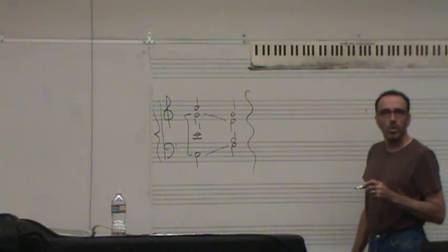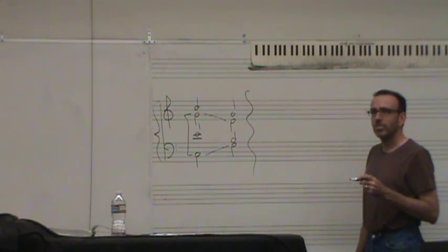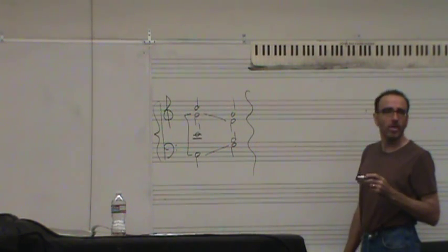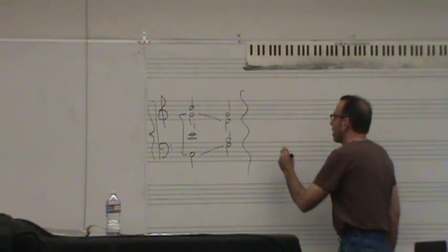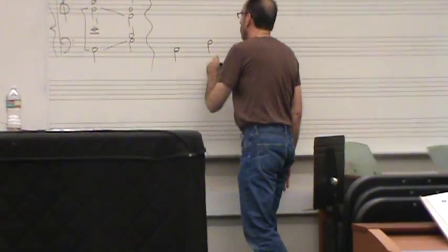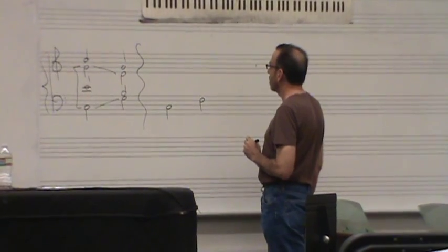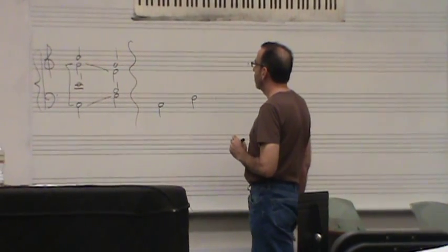So that's parallel fifths or octaves. The other weird one is directs. And people always get weird about this. They are hard to spot. But it's not terrible. Like, if I'm moving from one to four, let's say.